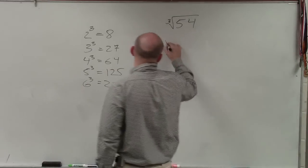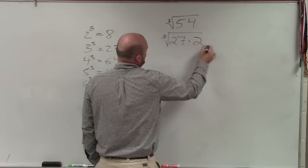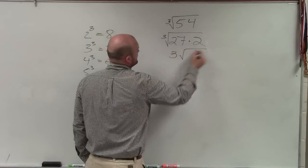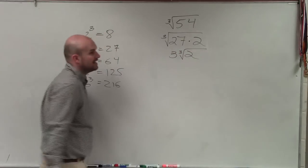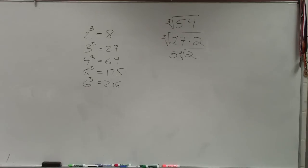So what I can do is rewrite this as cube root of 27 times 2. Now, I know the cube root of 27. That's 3 times the cube root of 2. And I can't simplify the cube root of 2, so that's just going to remain as 2.